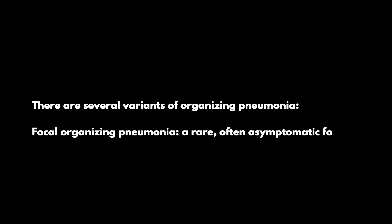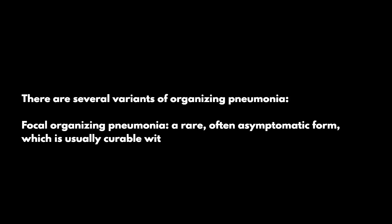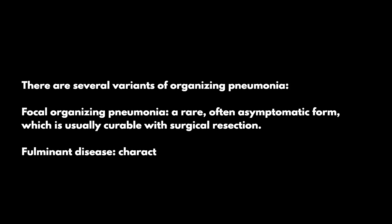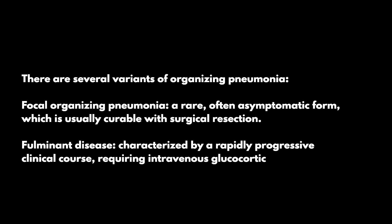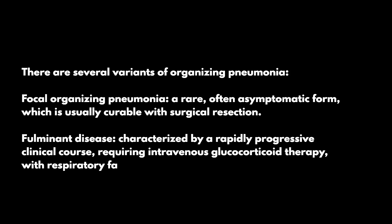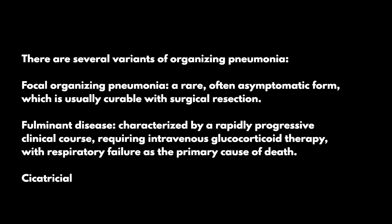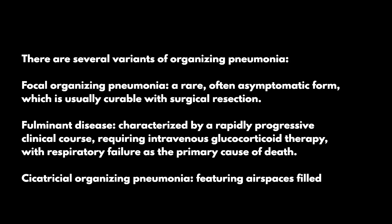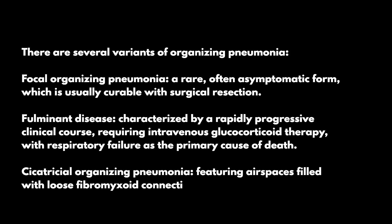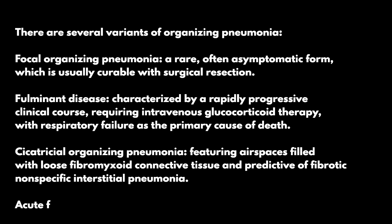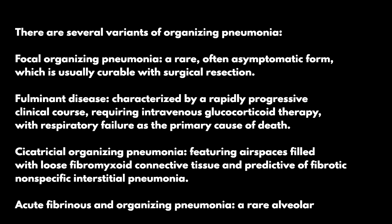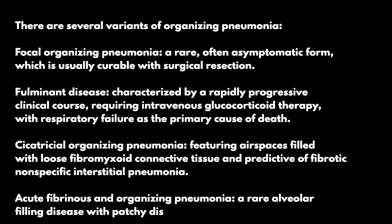There are several variants of organizing pneumonia. Focal organizing pneumonia is a rare, often asymptomatic form, which is usually curable with surgical resection. Fulminant disease is characterized by a rapidly progressive clinical course, requiring intravenous glucocorticoid therapy, with respiratory failure as the primary cause of death. Cicatricial organizing pneumonia features airspaces filled with loose fibromyxoid connective tissue and is predictive of fibrotic nonspecific interstitial pneumonia. Acute fibrinous and organizing pneumonia is a rare alveolar filling disease with patchy distribution.